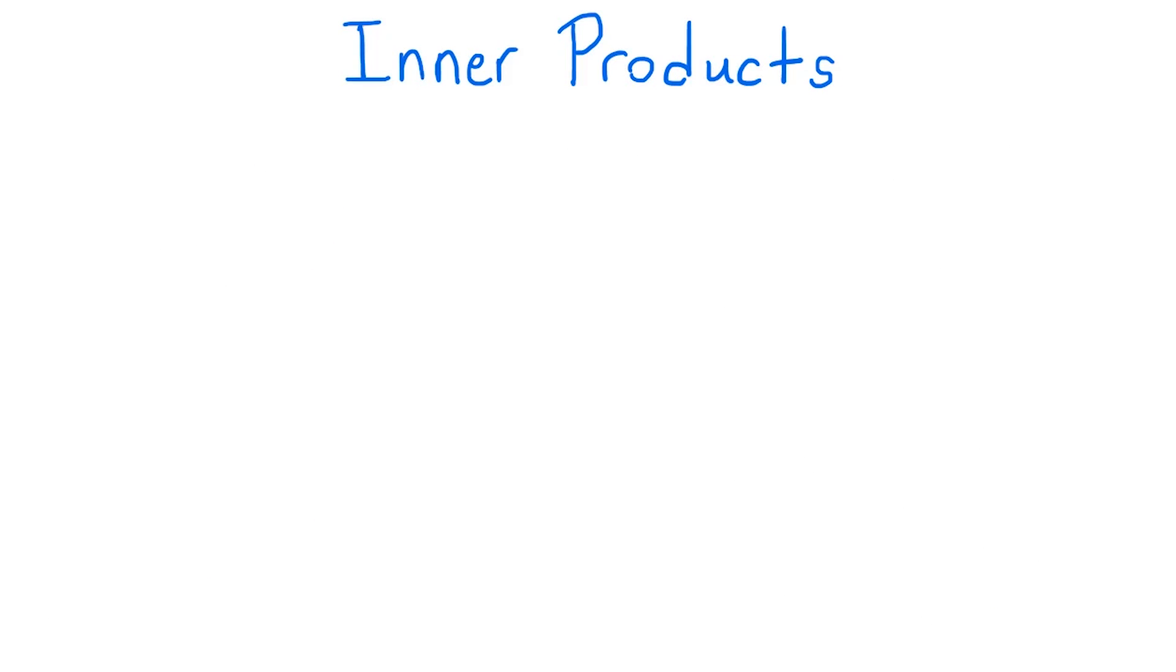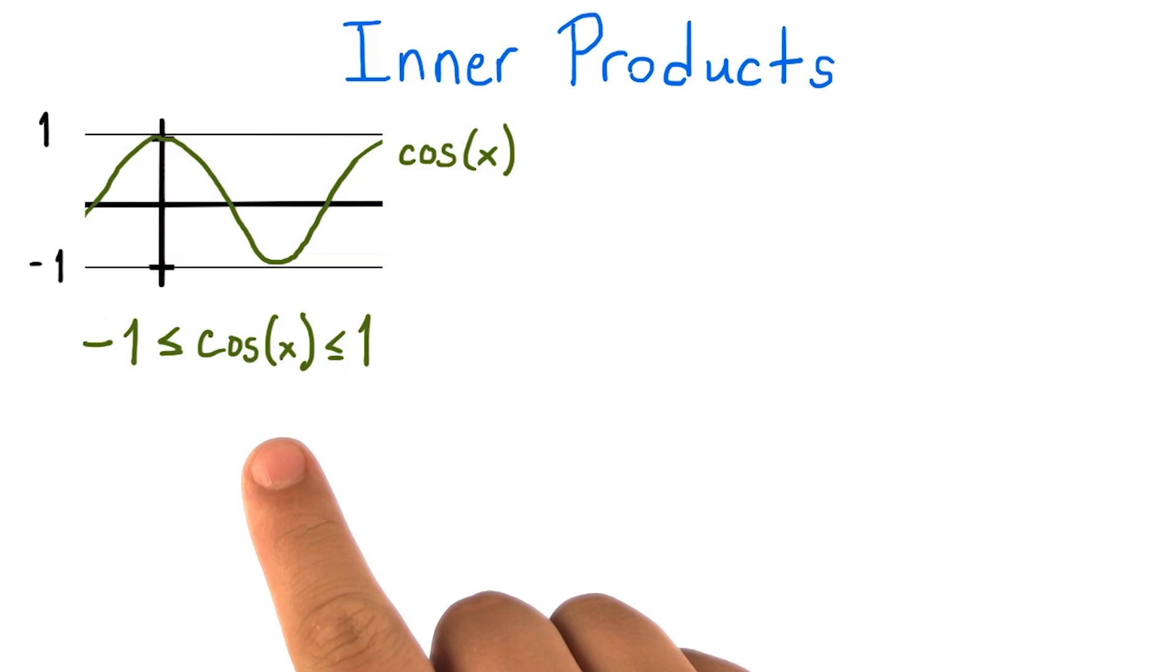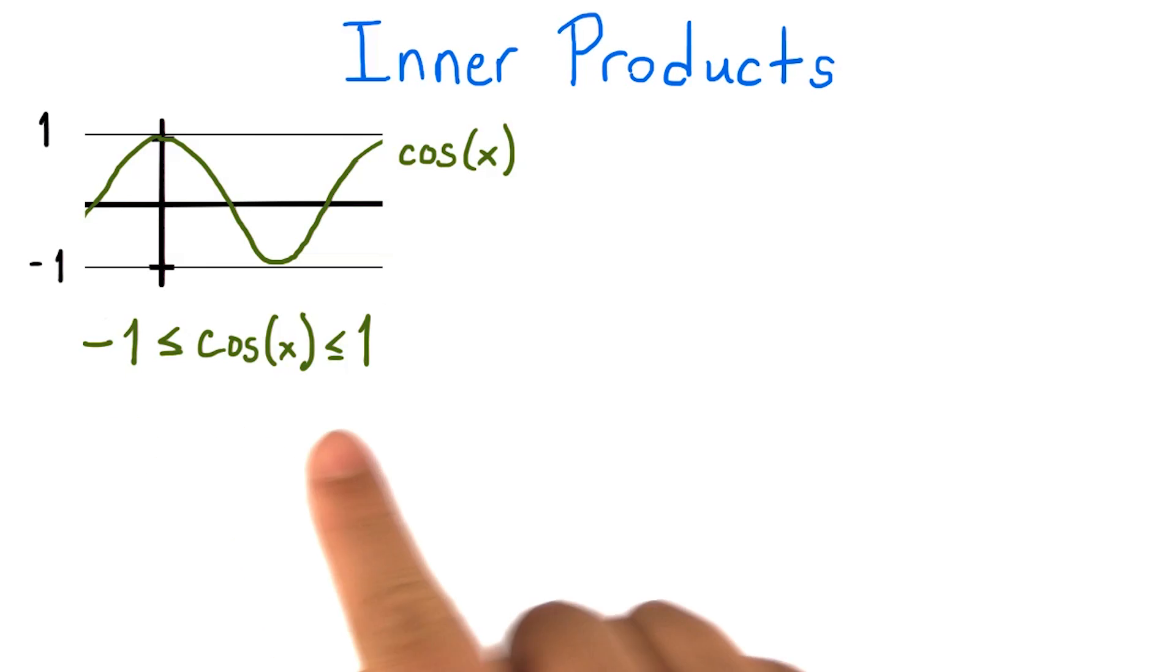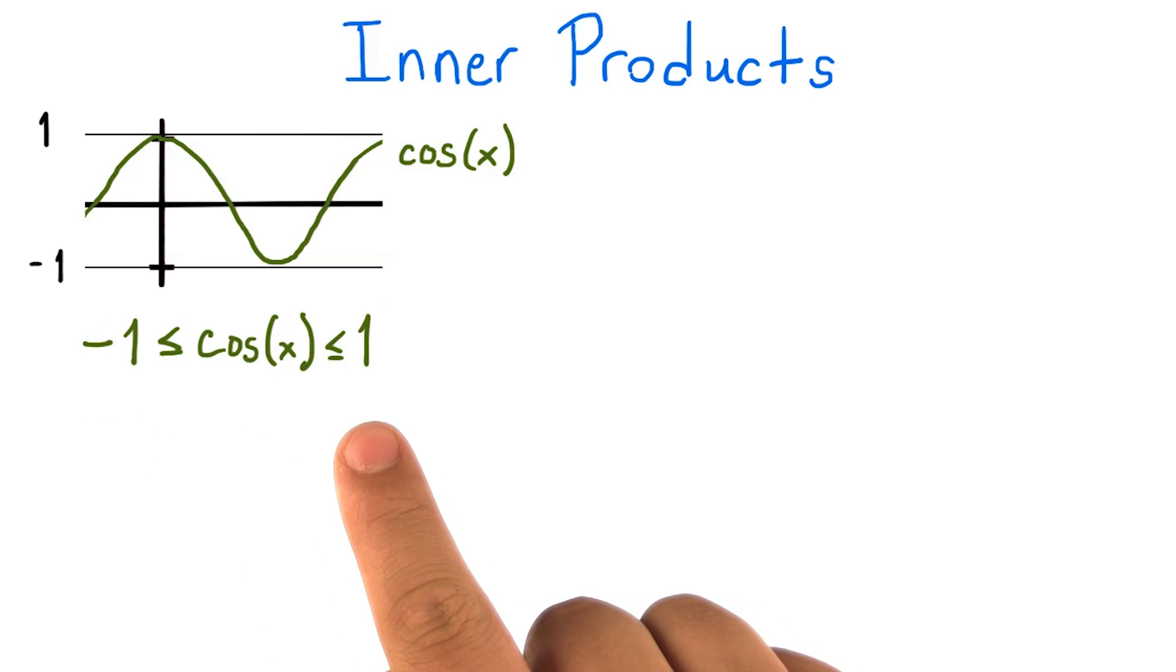There are some interesting consequences of this connection between the inner product of two vectors and their angle. First, recall that the cosine of x is always bounded below by negative 1 and above by 1, no matter what x is.